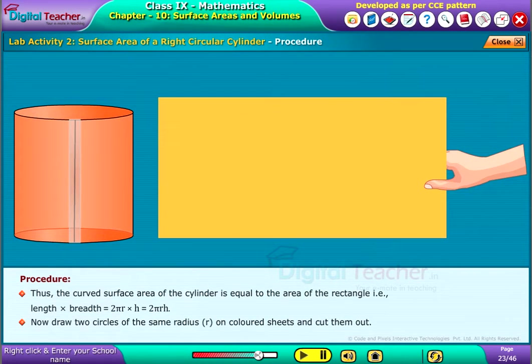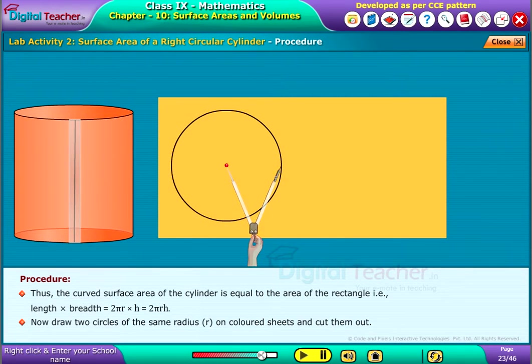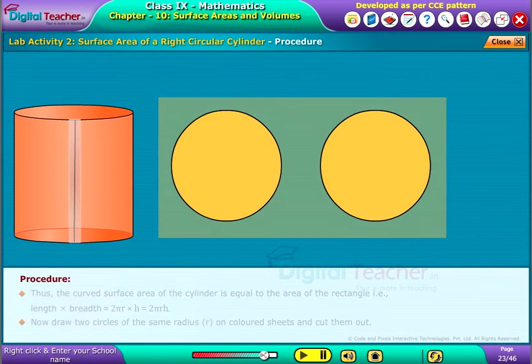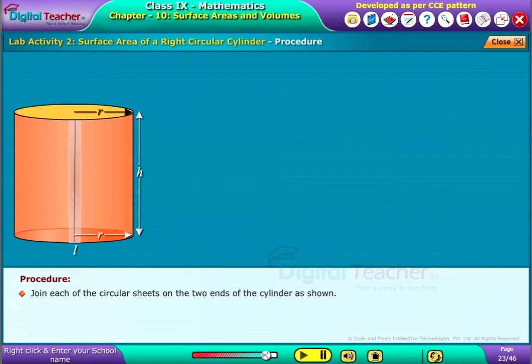Now, draw two circles of the same radius on colored sheets and cut them out. Join each of the circular sheets on the two ends of the cylinder as shown.